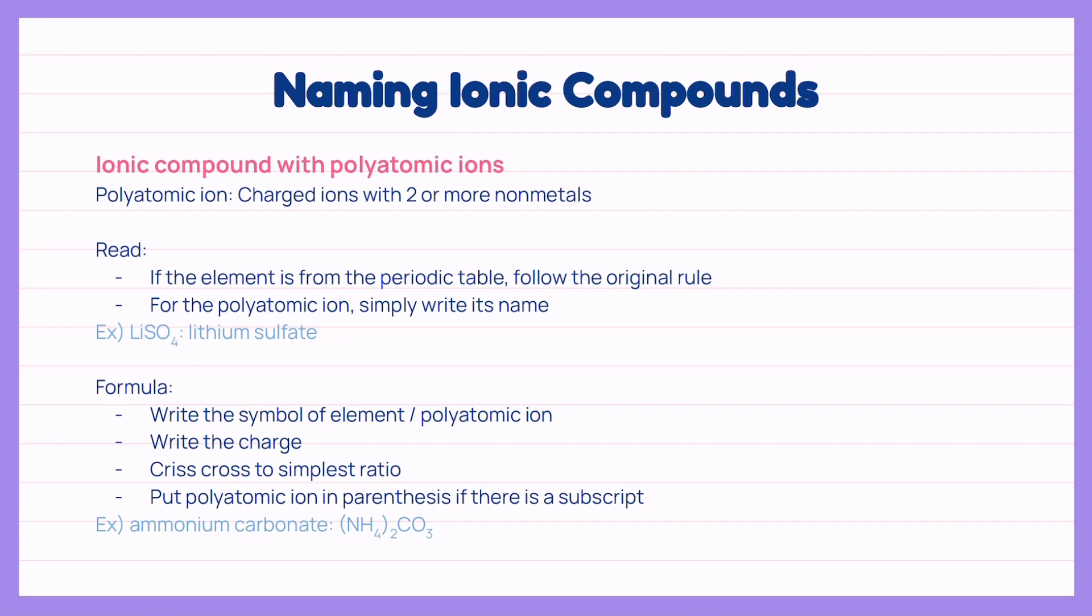We would eventually need to memorize the important and commonly used polyatomic ions. To give an example of reading this type of ions, we read LiSO4 as lithium sulfate, with SO4 or sulfate being the polyatomic ion.